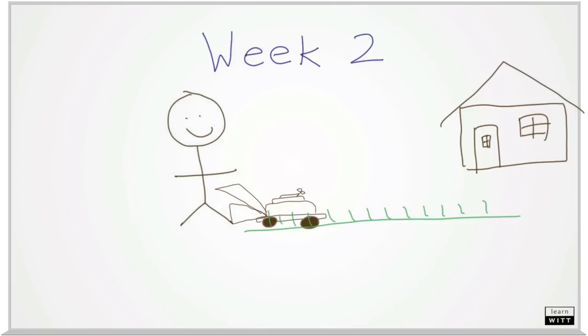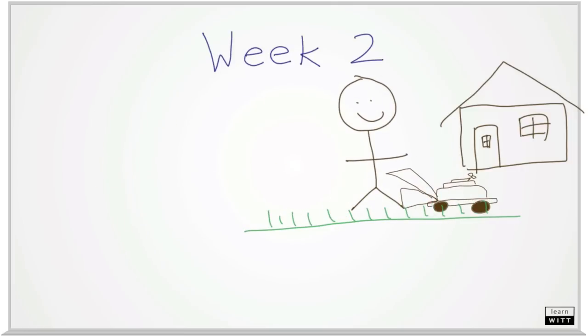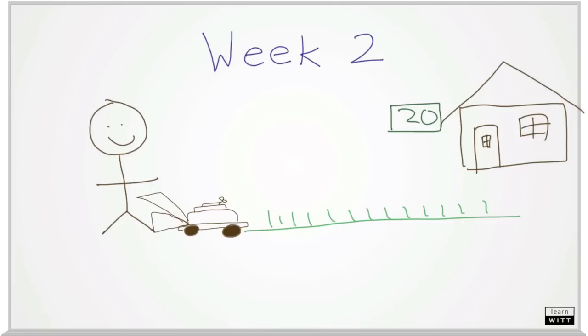In week two, Jim goes and mows the lawn again. This week, Jim is paid $20 for the two weeks of work from the owner of the lawn.